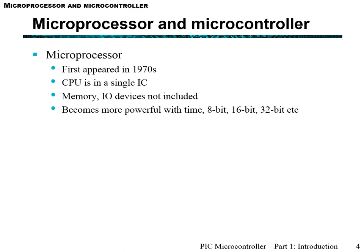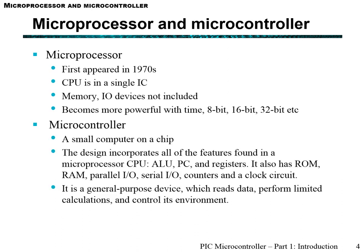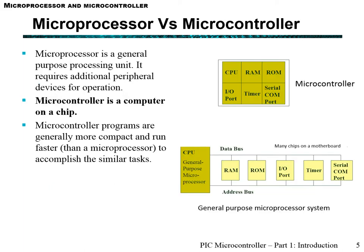A microprocessor is a CPU on a single integrated chip but does not include peripheral devices like memory and input/output devices. In contrast, a microcontroller is essentially a whole computer on a small chip — it includes input/outputs, RAM, ROM, counters, and a clock circuit. As shown in the figure, a microcontroller has all its peripheral devices and CPU contained within one single chip, while a microprocessor has its peripherals connected externally through a common board such as a motherboard.